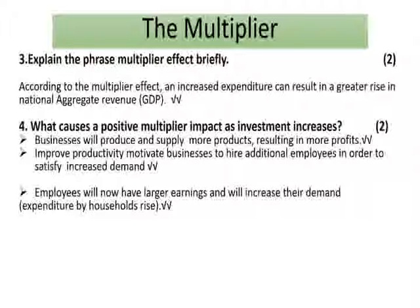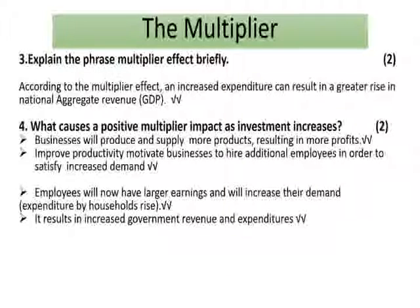Now that more workers have been hired, households are earning more money. When they have more money, they are going to demand more. This also results in increased government revenue and expenditure. Because more workers have been hired, those workers are going to be paying tax, meaning the government is now getting more money — government revenue increases. When government revenue increases, the government is also able to spend more.